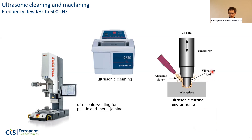A third example is ultrasonic cutting and grinding. For very hard materials, instead of using a hard metal tool for cutting or drilling, you can use an abrasive slurry — a suspension of hard abrasive particles. The movement comes from a transducer working at, for example, 20 kilohertz. When this tool vibrates up and down, you machine material from the workpiece — a very efficient method for hard materials.